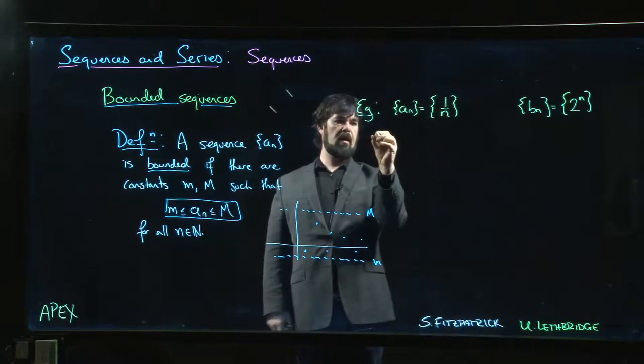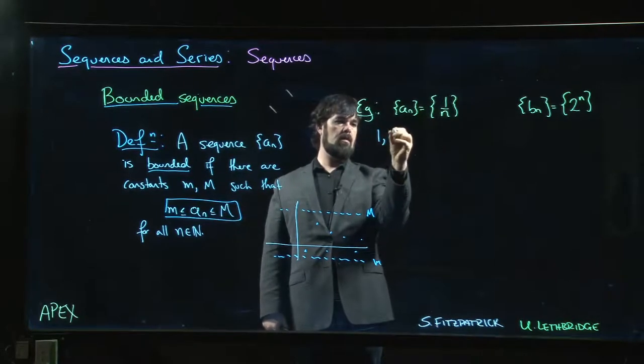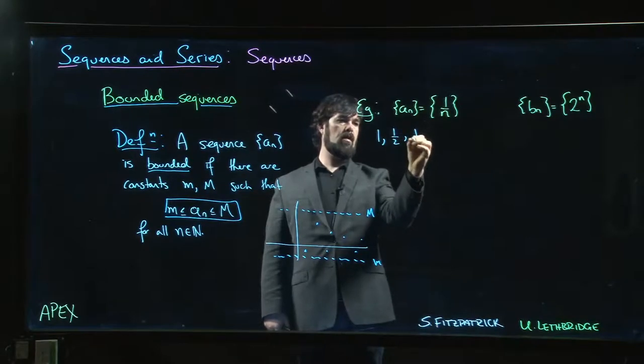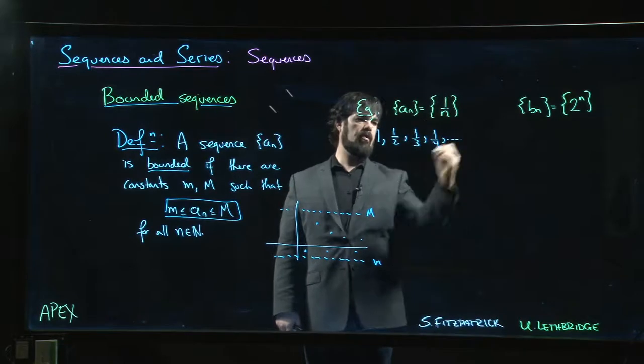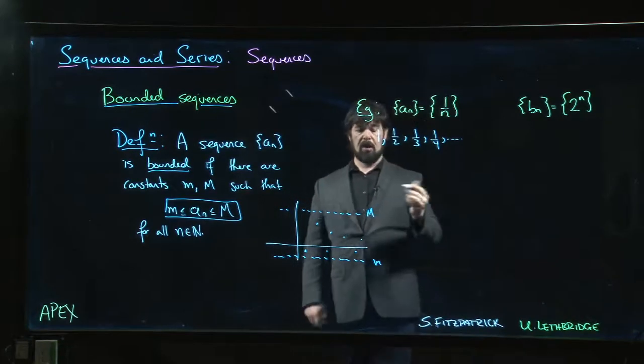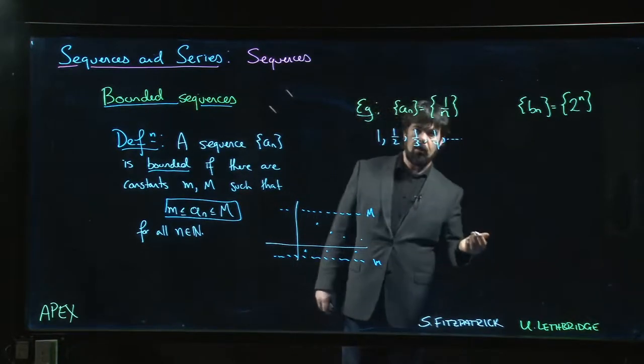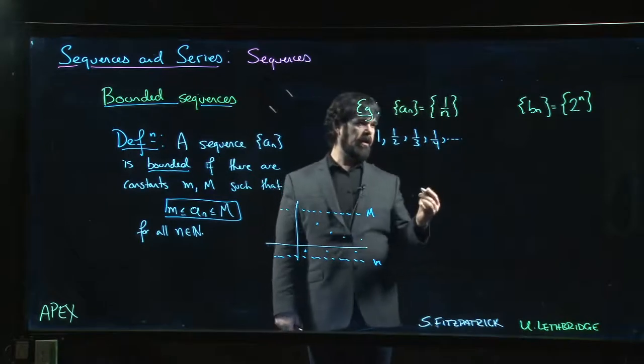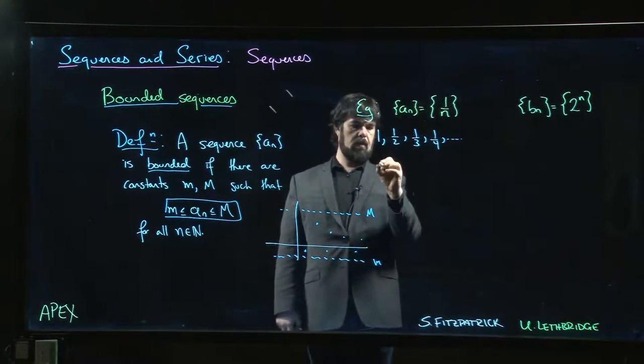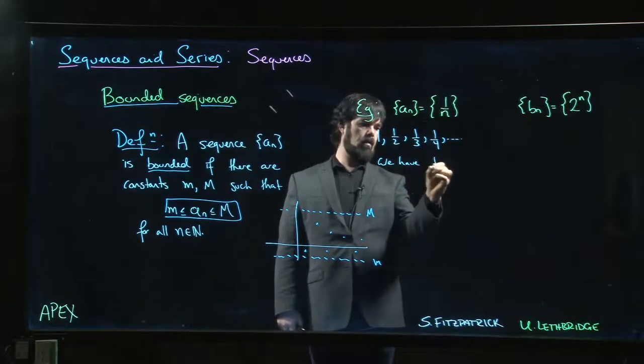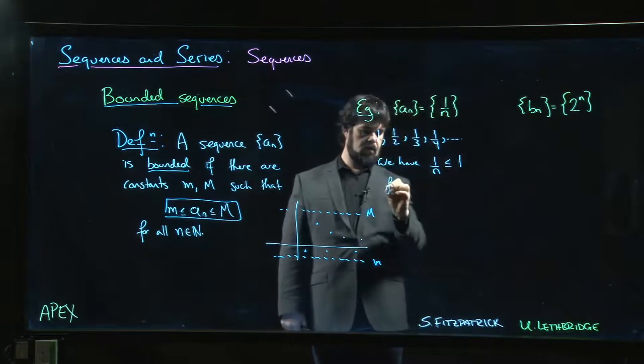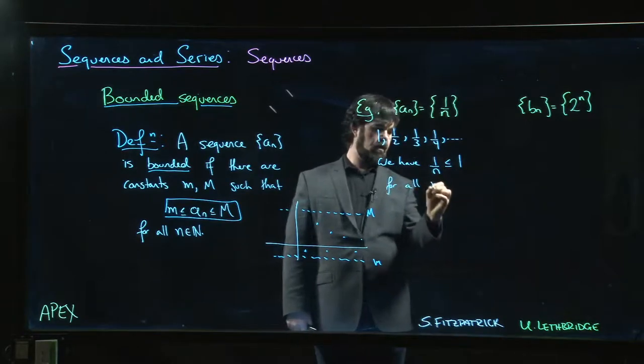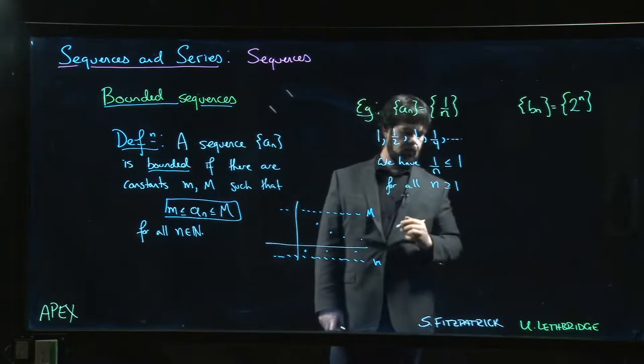So, here we have 1, 1 half, 1 third, 1 over 4, and so on. So, in particular they keep getting smaller. And I think it's pretty clear here that we have 1 over n less than or equal to 1 for all n bigger than or equal to 1.